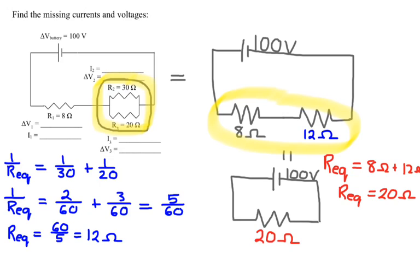So now that I've got it broken down to a simple one resistor circuit, now I can start to use Ohm's Law to analyze what's going on. So to find the current through this single 20 ohm resistor, I would simply divide the voltage of the battery, so 100 volts over 20 ohms, which gives me a current of 5 amperes.